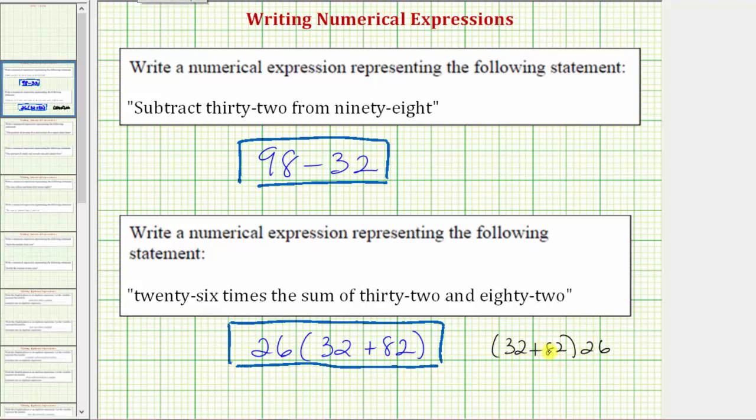Addition is also commutative, which means if we change the order of addition it does not change the sum. So looking back to the original expression we could also write an equivalent expression as 26 times the sum of 82 and 32, which in parentheses would be 82 plus 32.